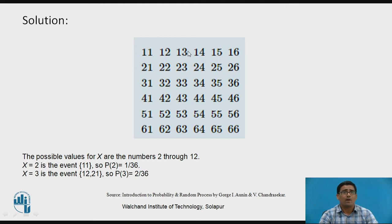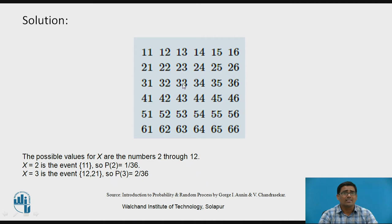There are two dice. The first die shows one and the second die shows one, two, three, four, five, six — and similarly for when the first die shows two, and so on up to six, six. In this way we get all the possible outcomes. The possible values for X are the numbers two through twelve.